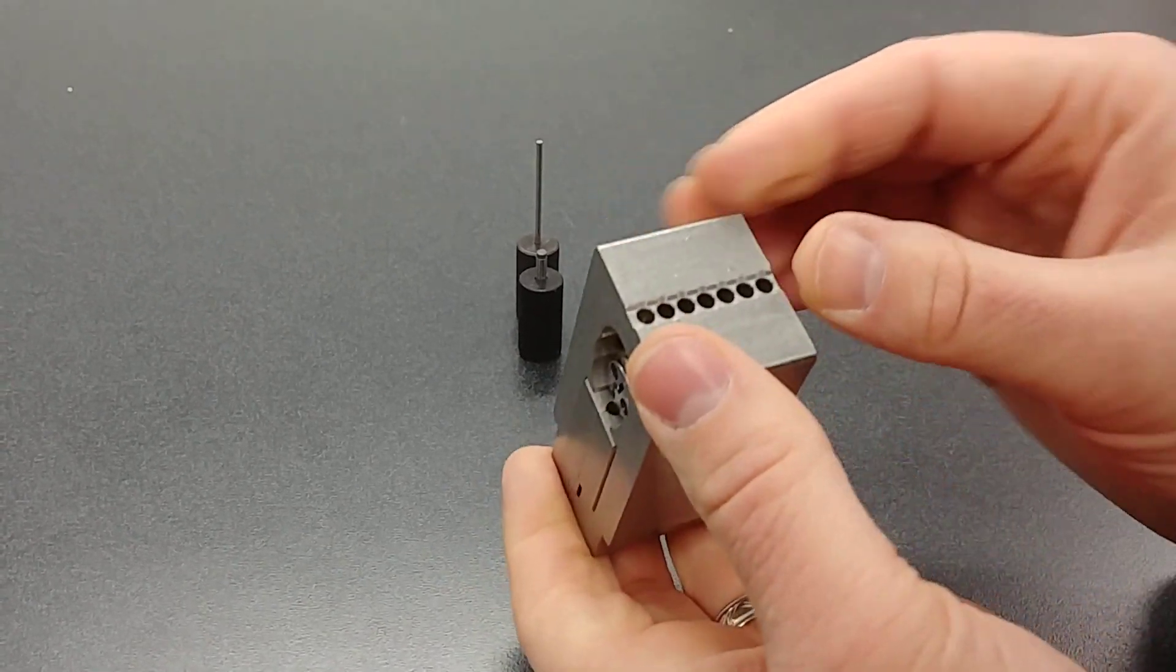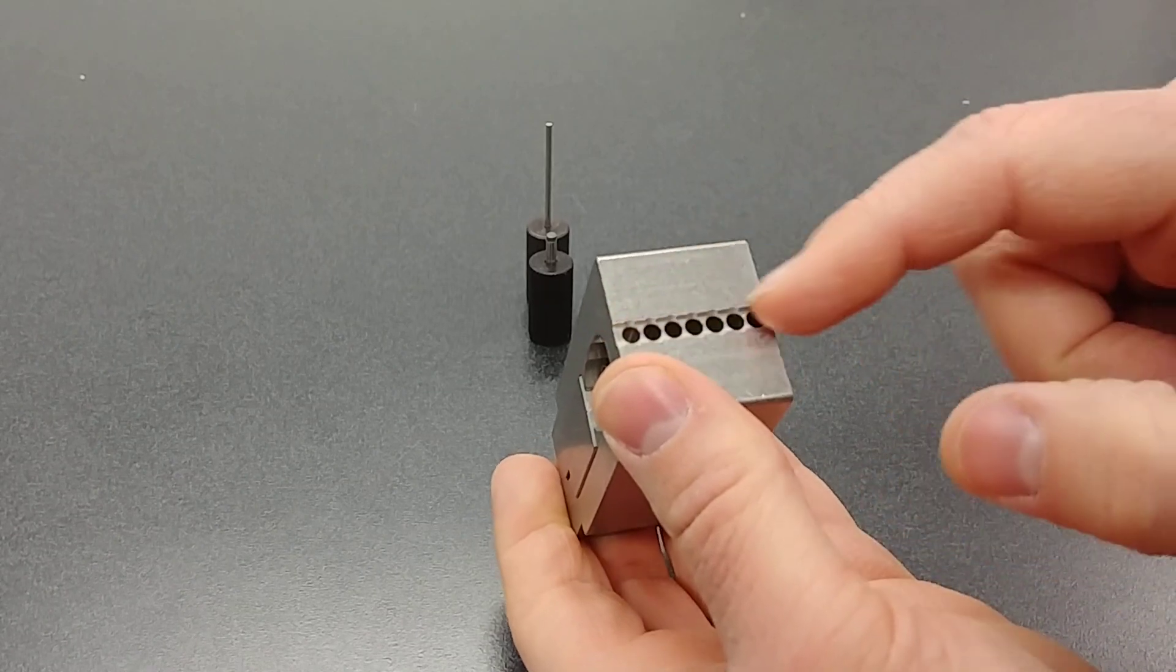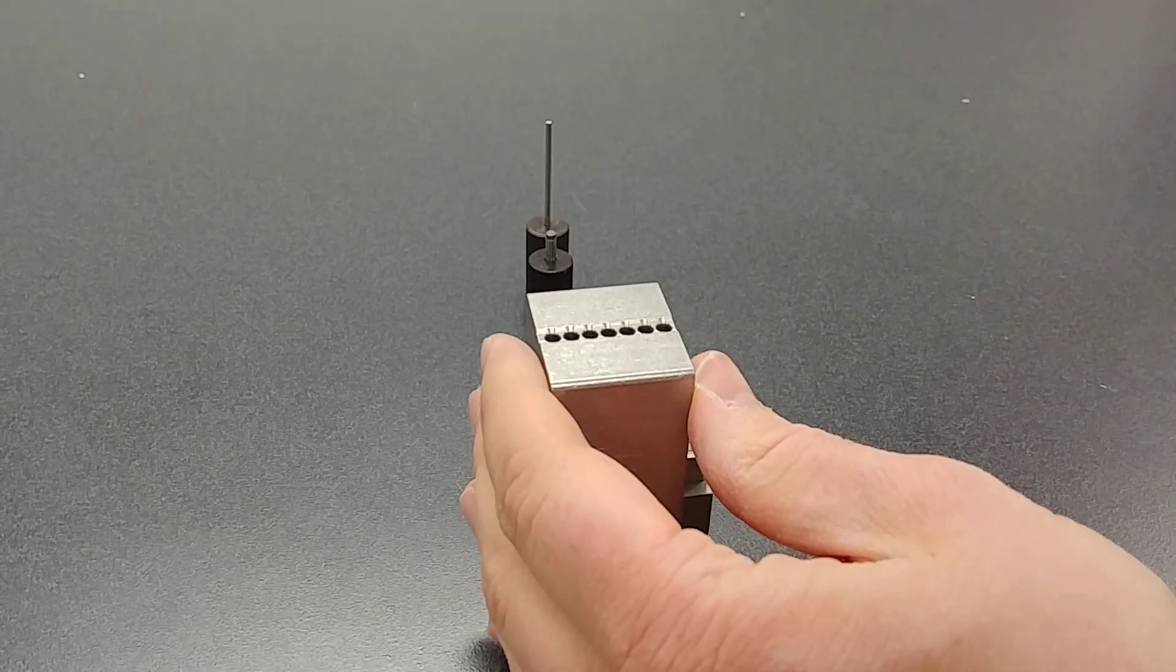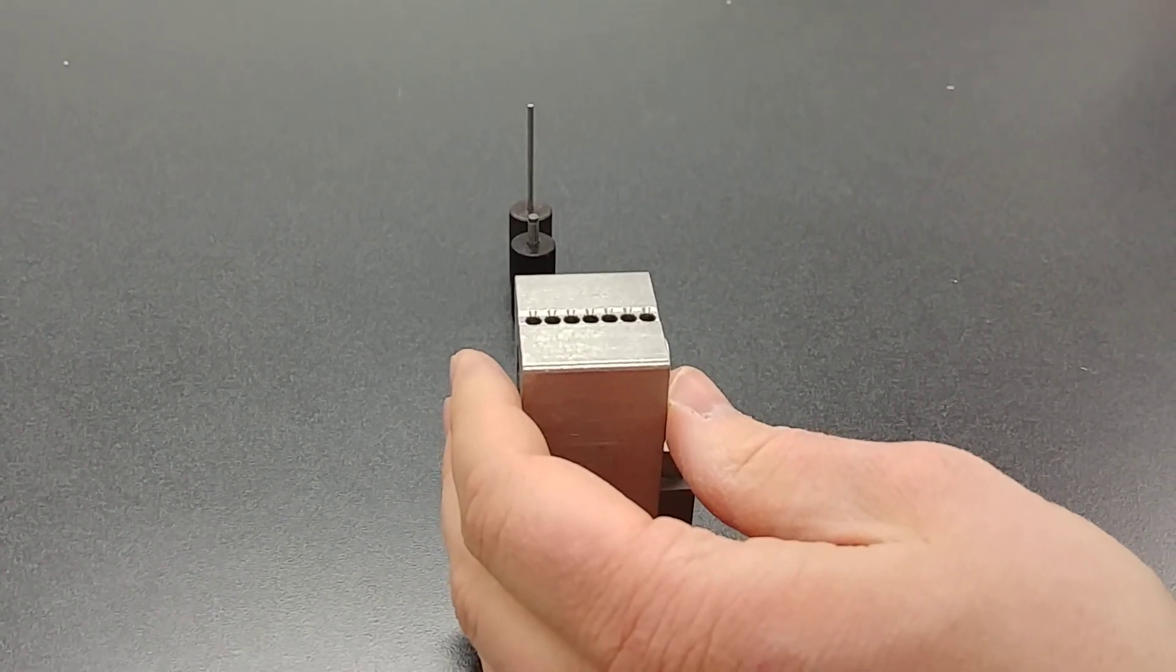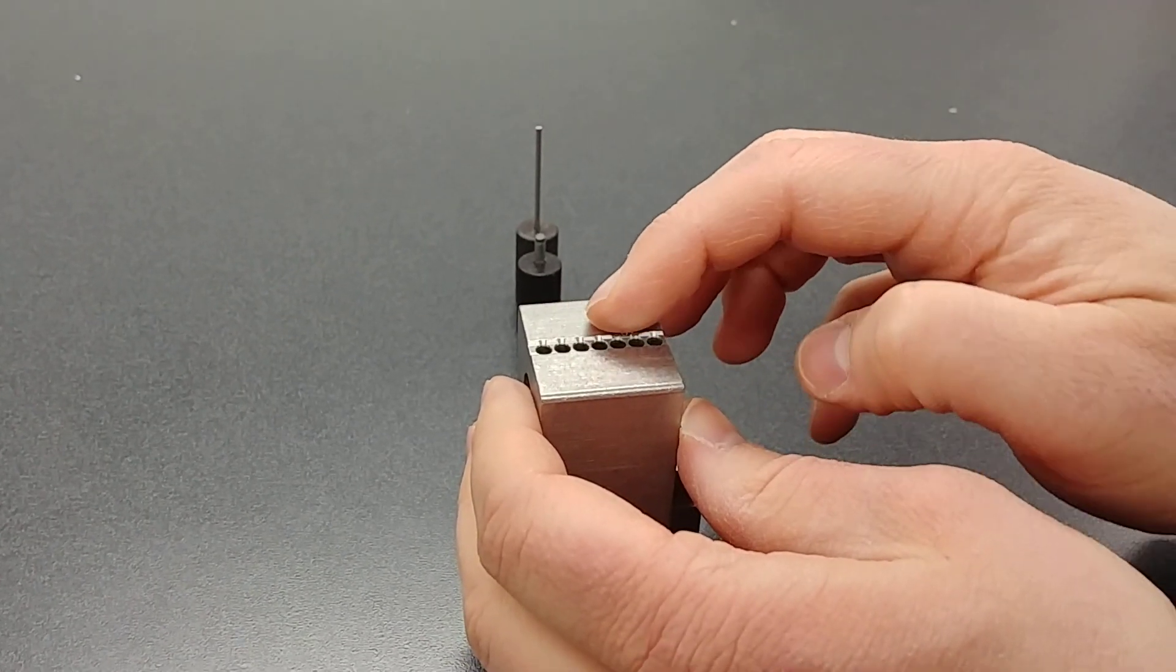If you have a six or a seven pin core, there's a spot for both. What you'll want to do is you'll put your caps, you'll put your pins, your springs, and then you'll put your cap in.